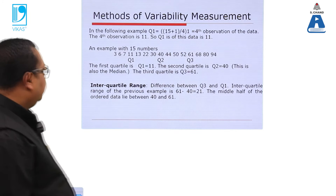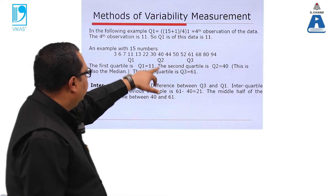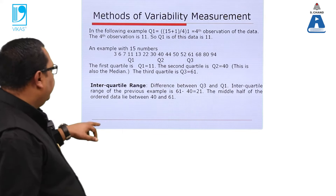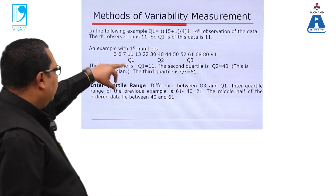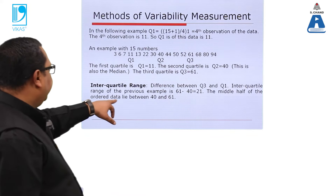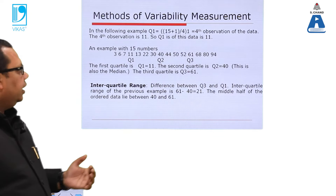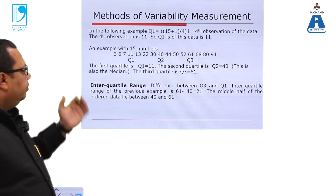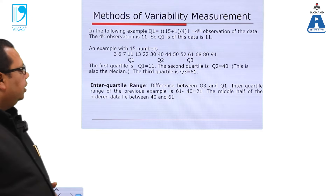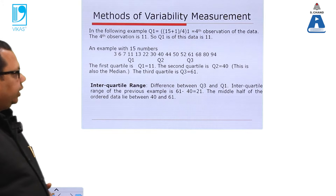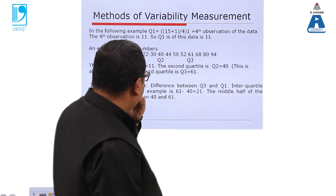The inter-quartile range is Q3 minus Q2, which is 61 minus 40 = 21. This represents the middle half of the ordered data, which falls between 40 and 61. We can see how the data is broken into different quartiles and how we calculate the difference within each particular quartile.